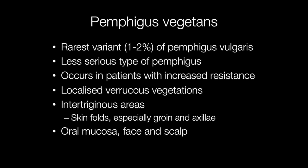It is characterized, as the name implies, by localized verrucous vegetations. Pemphigus vegetans affects the skin folds — the intertriginous areas such as the groins and axillae — and it also affects the oral mucosa.